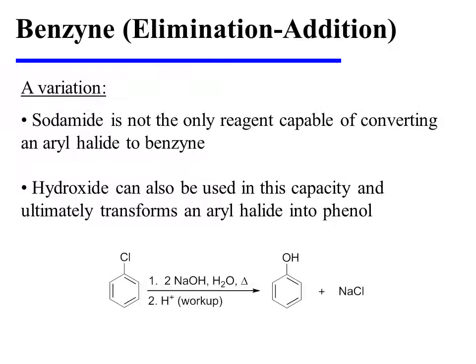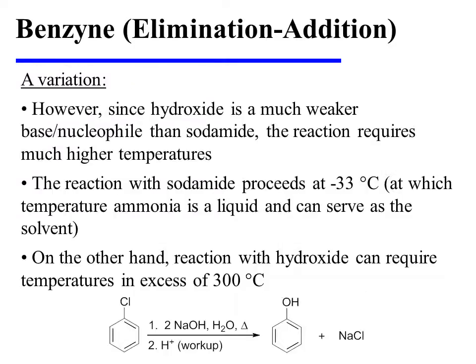Variations on this theme are possible. Sodamide is not the only reagent capable of converting an aryl halide to benzyne. Hydroxide can also be used in this capacity, and ultimately transforms the aryl halide into a phenol. However, since hydroxide is a much weaker base and nucleophile than sodamide, the reaction requires much higher temperatures. The reaction with sodamide proceeds at minus 33 degrees Celsius, at which temperature ammonia is a liquid and can therefore serve as the solvent, whereas the reaction with hydroxide can require temperatures in excess of 300 degrees Celsius.